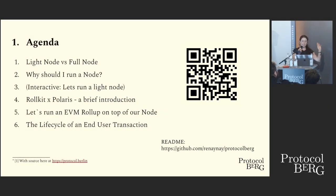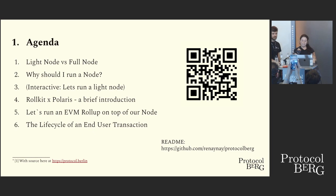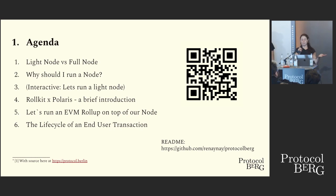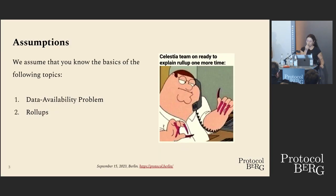Here's what we're going to cover today: Gabriel is going to give a rundown of what a light node is compared to a full node and why you should run one. Then we'll get a light node running, talk about Rollkit and the Polaris integration — a rollup sequencer running on top of a light node — and finish with a lifecycle of transaction demonstration on the whiteboard.